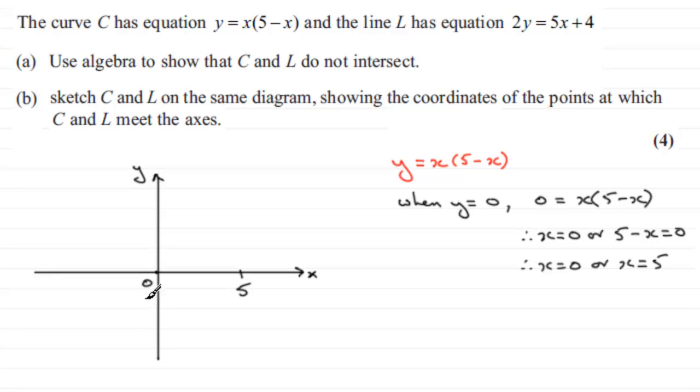So we just need to sketch this in. So it's going to come up through the origin like so, over the top here, and then back down again through the 5. So looking something like that. Not a great sketch.